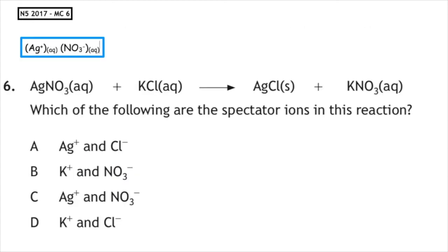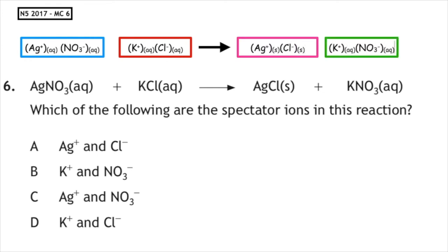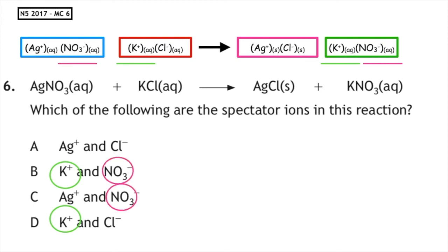This past paper question is from the National 5 2017 multiple choice question 6: which of the following are spectator ions in this reaction? Again, we're going to read the question backwards. We are looking for an ion, so therefore it has to be in solution — the word solution ends in ion. Reading this backwards, we can see that the potassium nitrate is in the aqueous state. We have a K⁺ ion found on both sides of the equation, and we've got a nitrate ion found on both sides of the equation. So the correct answer to this is multiple choice answer B.